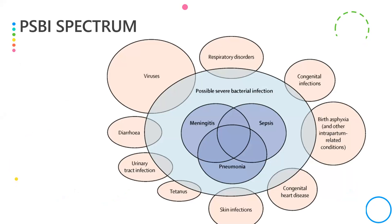PSBI in the community encompasses bacterial septicemia, pneumonia, and meningitis. Because these clinical signs are nonspecific, we may over-diagnose and include other illnesses, but missing affected babies would be dangerous. This is the intended scope of PSBI.